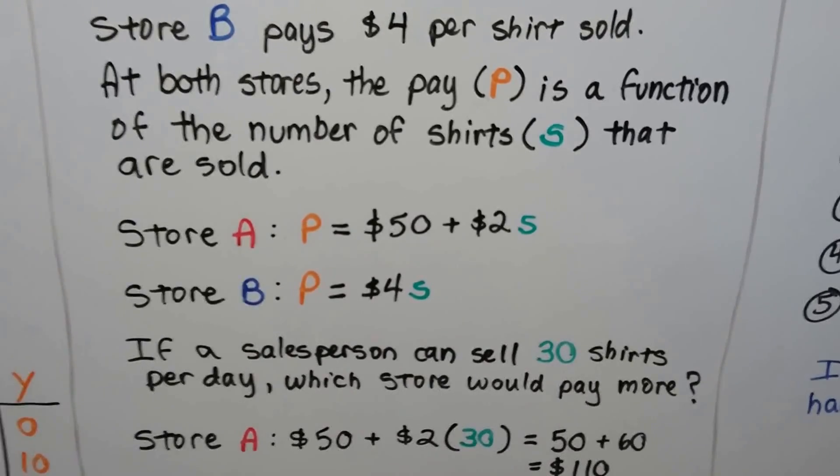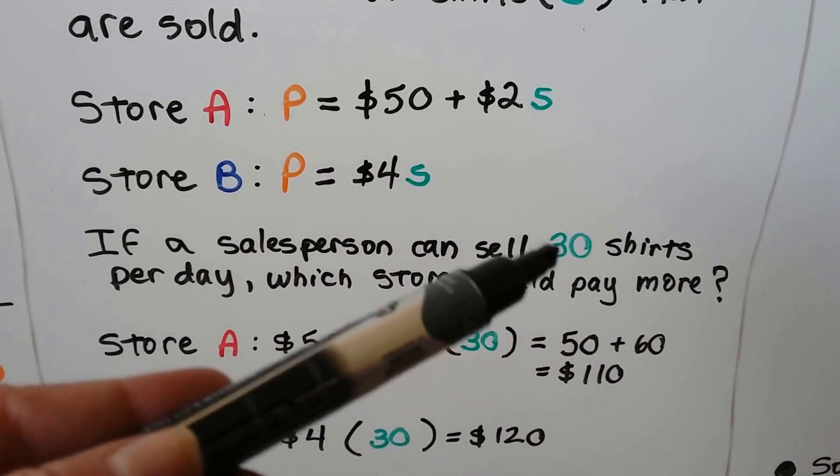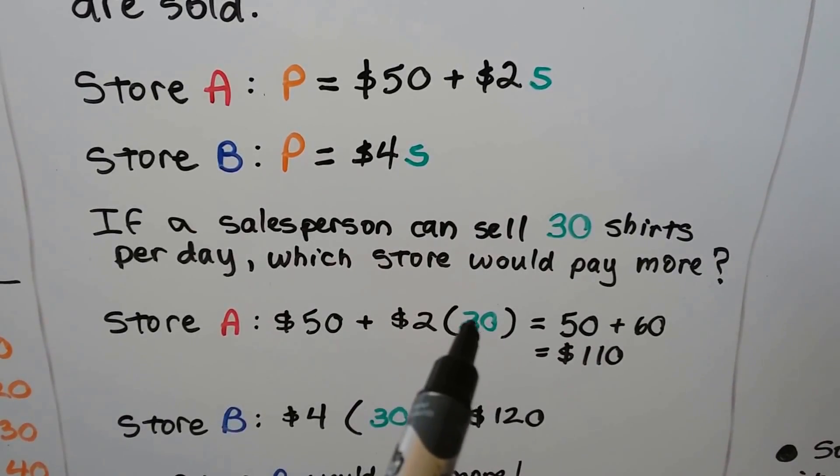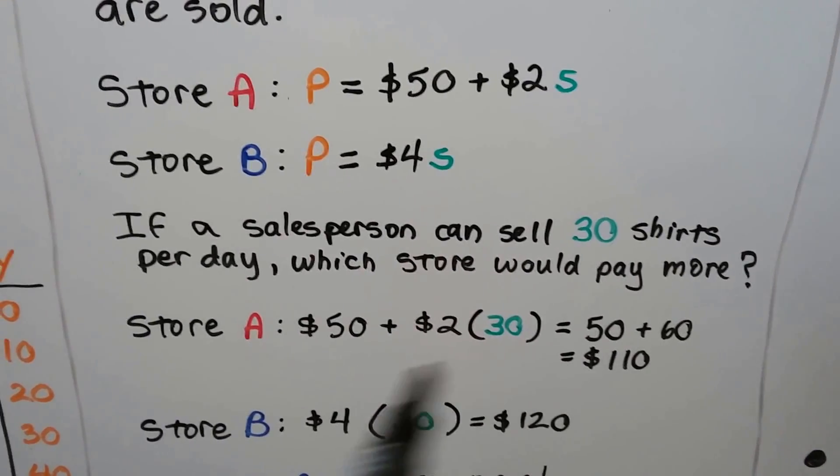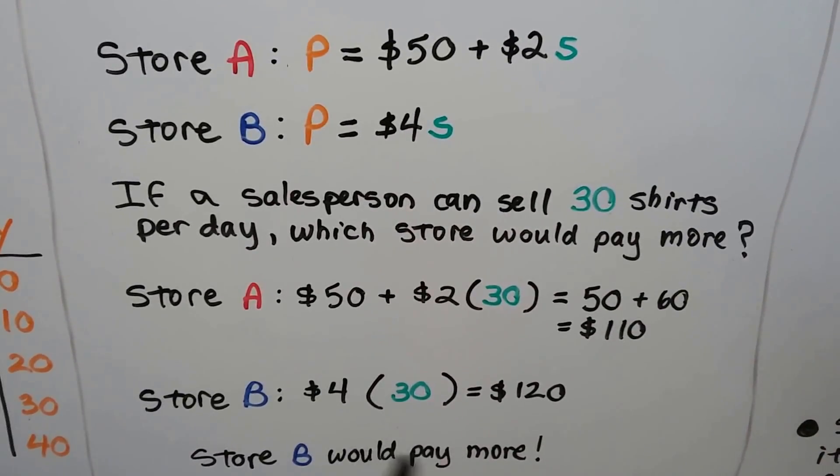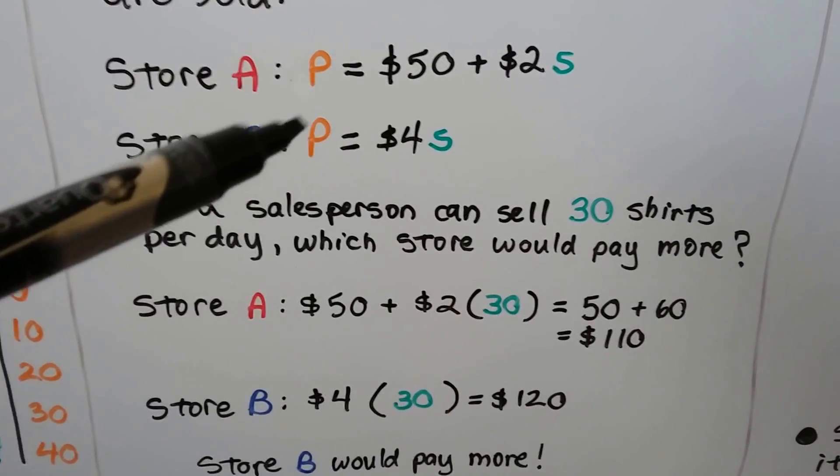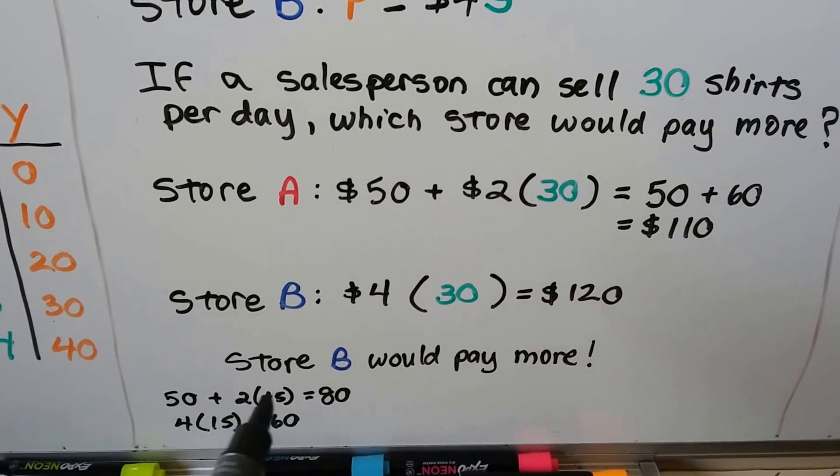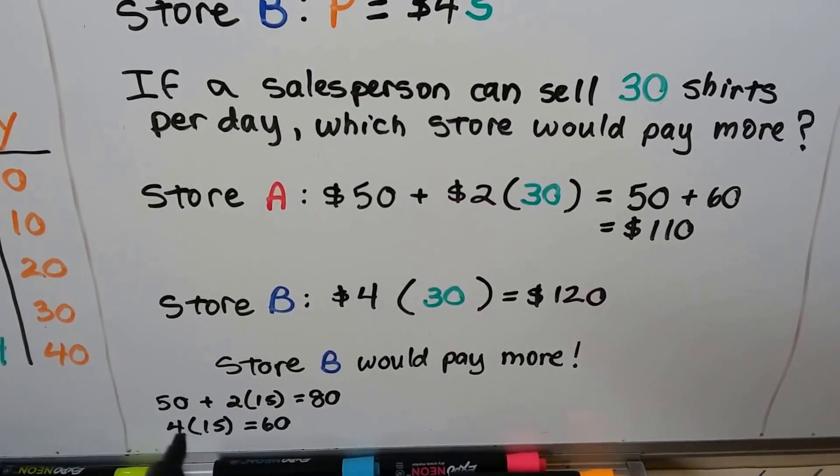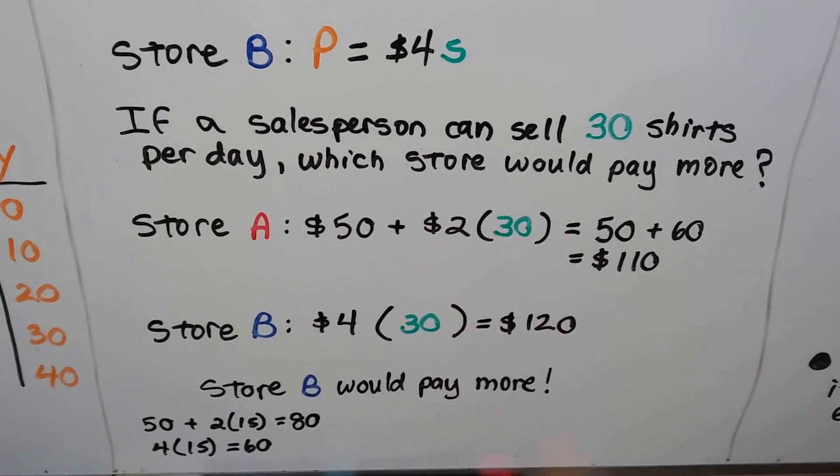If a salesperson can sell 30 shirts per day, which store would pay more? Let's plug this 30 in for S. Store A has $50 plus $2 times 30. That would give us $110, $50 plus $60. Store B, $4 times $30 gives us $120. So store B would pay more. But if store A had 15 shirts sold, 2 times 15 is $30 plus the $50 would be $80 and 4 times $15 is $60. So in this case, if you only sold 15 shirts, store A would pay better because of that $50 a day.